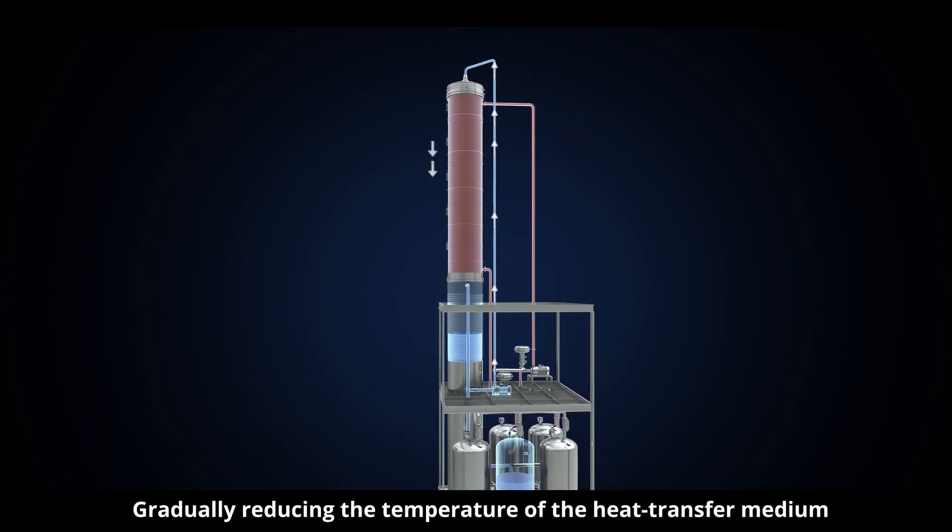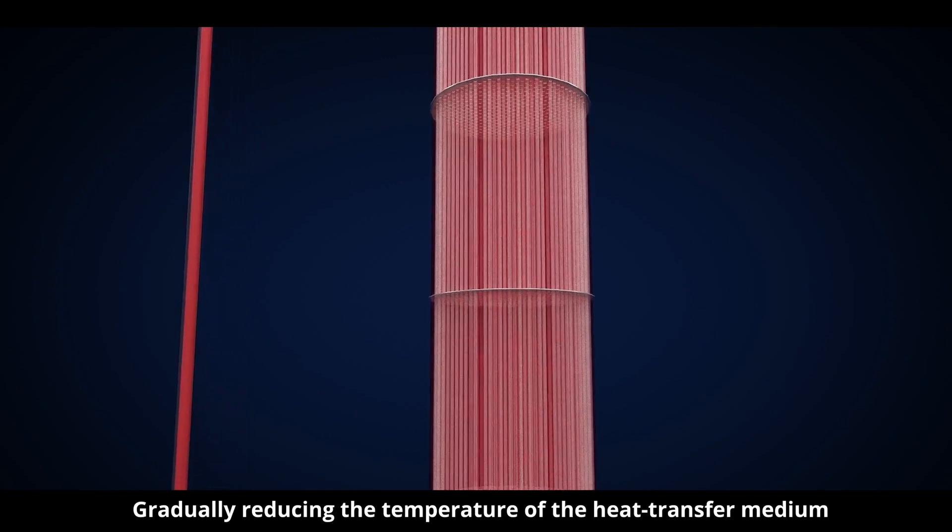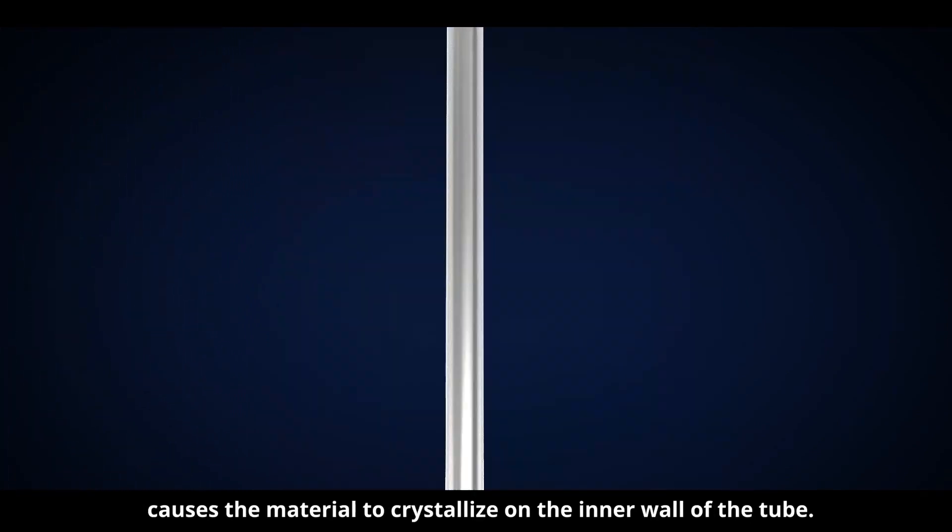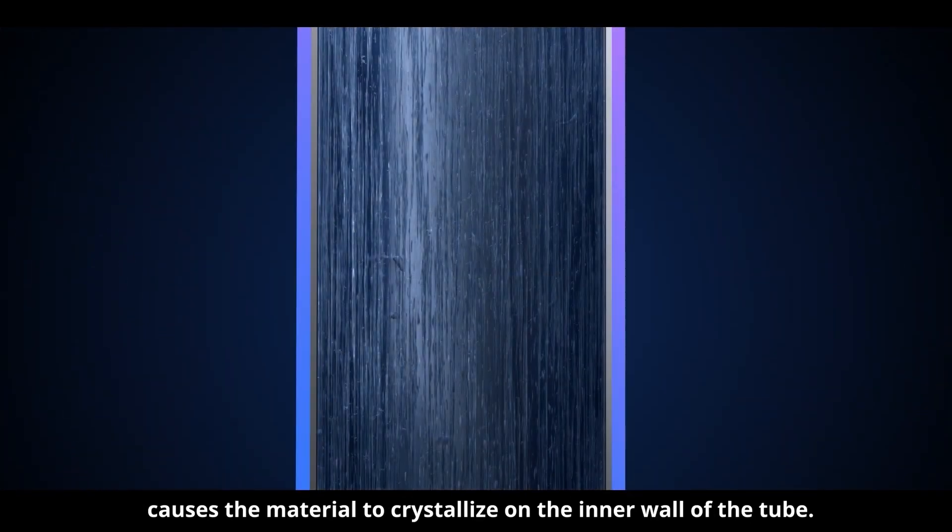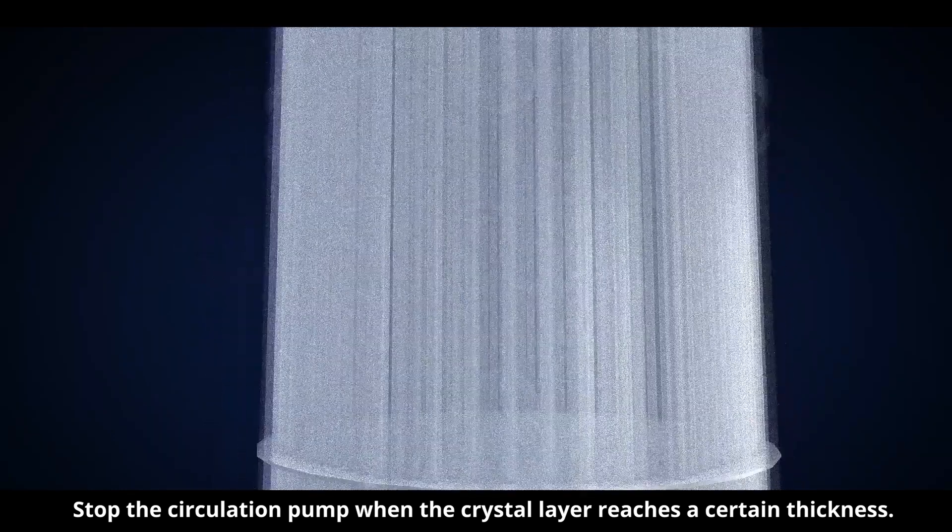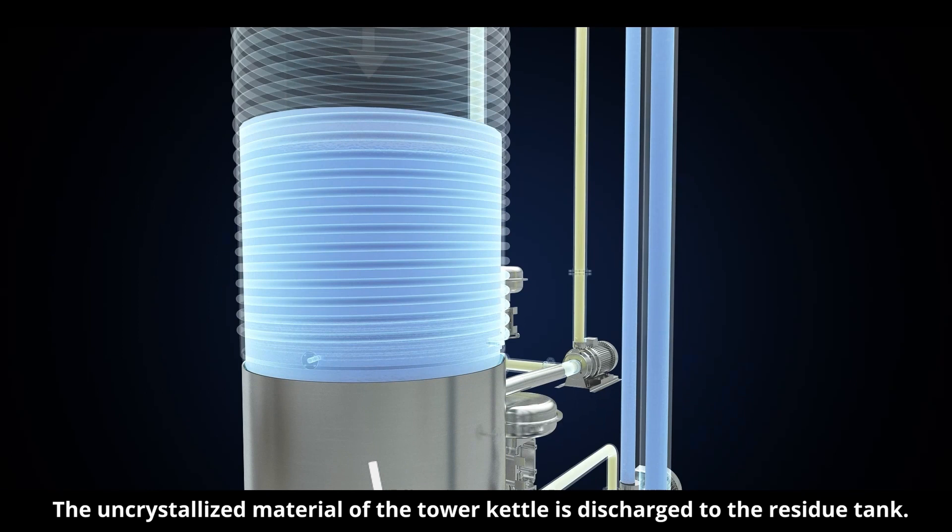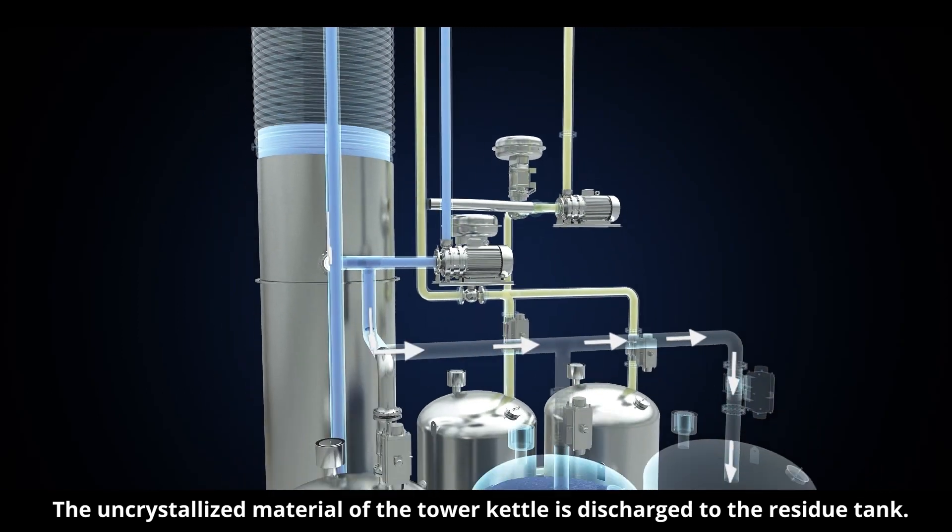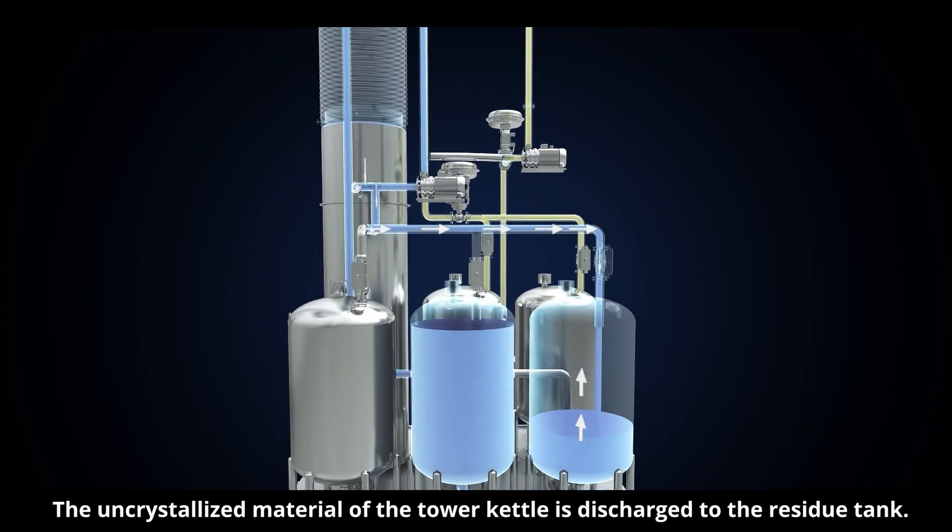Gradually reducing the temperature of the heat transfer medium causes the material to crystallize on the inner wall of the tube. Stop the circulation pump when the crystal layer reaches a certain thickness. The uncrystallized material of the tower kettle is discharged to the residue tank.